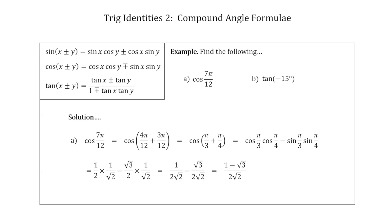It's not conventional to leave a square root in the denominator, so we rationalize by multiplying the top and bottom by √2. Multiplying 1 by √2 gives √2, and √3 by √2 gives √6, so the numerator becomes √2 − √6. For the denominator, 2√2 × √2 = 2 × 2 = 4. So the final answer for Example A is (√2 − √6)/4.